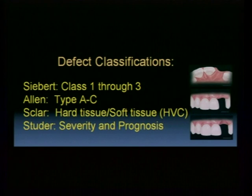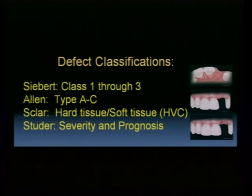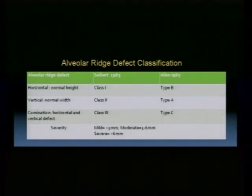The thrust of this talk is defect classification: how to classify defects properly, and how to implement treatment predictably. The four classification systems include the classic by Siebert, repeated by Dr. Allen, with straightforward buccal-lingual, corono-apical, and combination defects. Dr. Sklar's textbook addresses the composition of defects — whether hard tissue, soft tissue, or combined — for implant site preparation. Studer provides a nice framework for severity and prognosis.